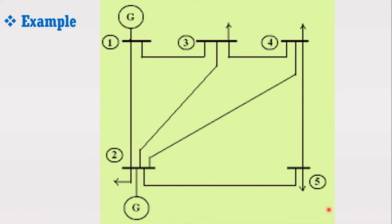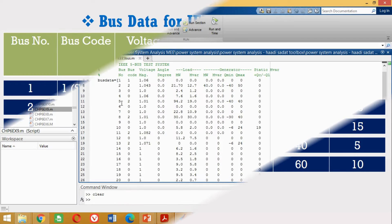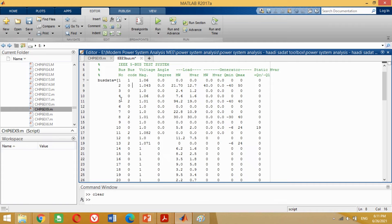Similarly, look at the figure again. Now we have to put the data for bus 2. Bus 2 consists of a generator as well as a load; therefore, we will consider this bus as a PQ bus or load bus. The bus code for the load bus is set to 0. Put the values of bus 2 as shown, making all other entries 0 where data is not given.